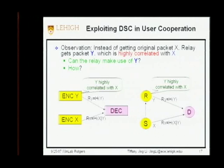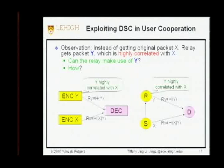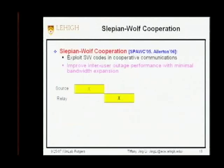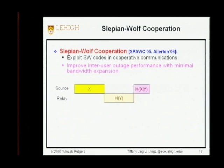For distributed source coding, we already know from theory that we can do asymmetric compression: let y compress at full rate (transmit entropy of y), and let x transmit an additional amount equal to the conditional entropy. The same applies here: we let y transmit at full rate, and the original source transmits an additional amount. Since we use Slepian-Wolf coding, the source and relay do not have to communicate directly — the source only needs to know the statistics, meaning the correlation between x and y (essentially the error rate on the inter-user channel).